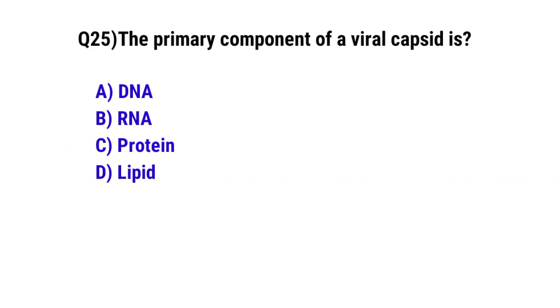Question number 25. The primary component of a viral capsid is. The correct option is C: proteins.